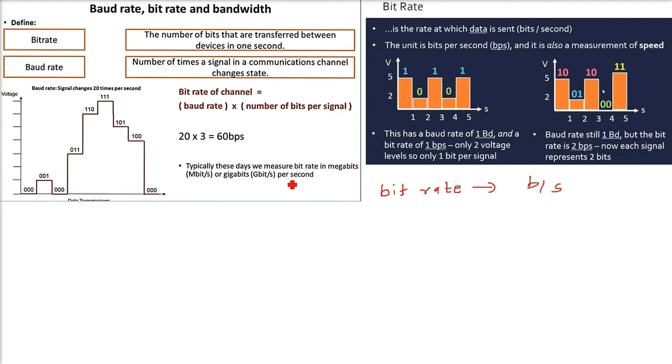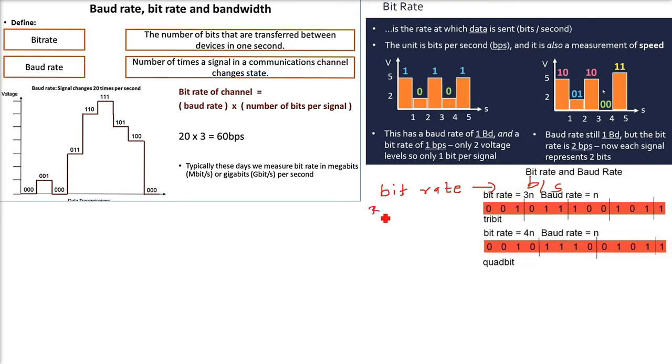Bitrate and baud rate is the number of times a signal in a communication channel changes its state. The changing state of signal is baud rate and the number of bits that are transferred in one second is bitrate. So the signal, number of times it is changing its state is baud rate.